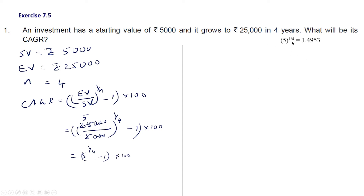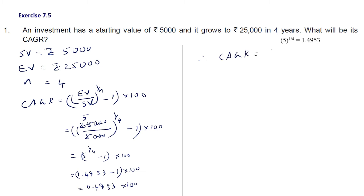The value of 5 raised to 1 by 4 is 1.4953. So it is 1.4953 minus 1, into 100, which is 0.4953 into 100. Therefore the compound annual growth rate is 49.53 percent.